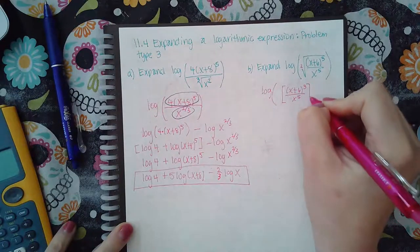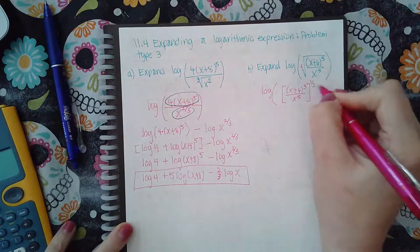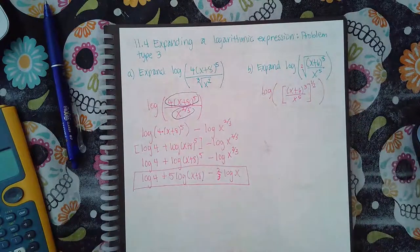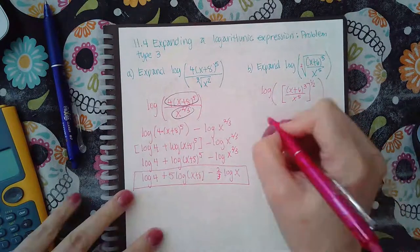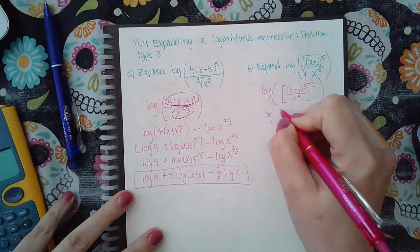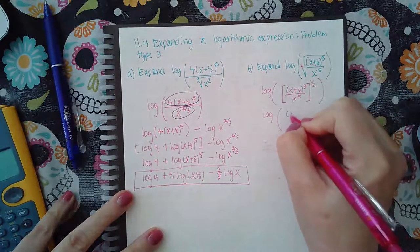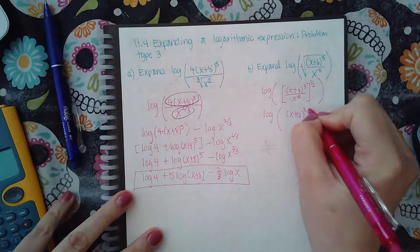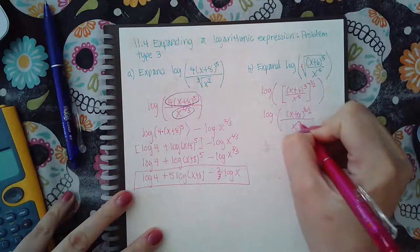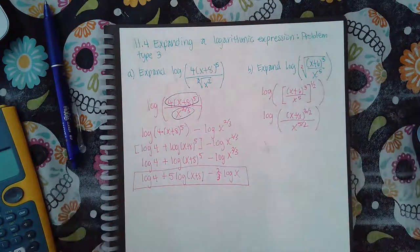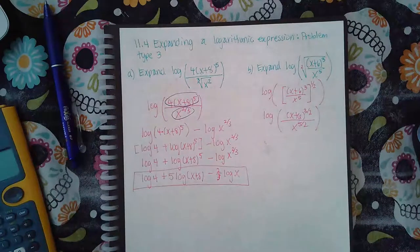Then that one half exponent does need to apply to the numerator and the denominator. So then this becomes x plus 6 to the three halves and this becomes x to the five halves. Now that's as simplified as it's going to get.